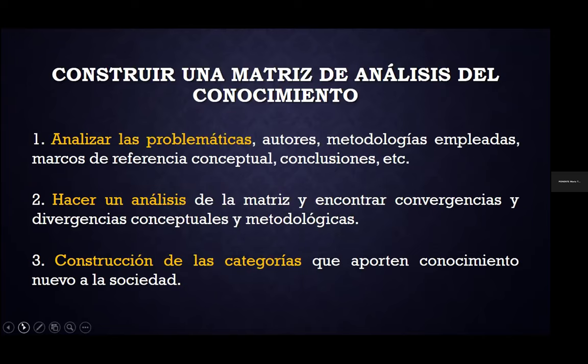¿Qué puede hacer el sujeto investigador con este rastreo de información? Construir una matriz de análisis del conocimiento para analizar las problemáticas: qué han dicho los autores en torno al problema, qué metodología emplearon, qué marcos de referencia conceptual utilizaron y a qué conclusiones llegaron. También hacer un análisis de la matriz para encontrar convergencias y divergencias conceptuales y metodológicas. Es aquí donde entra la parte creativa del investigador: en las divergencias, en qué es lo nuevo, qué falta, qué no está indagado, qué falta por investigar; ahí es donde entra la construcción de nuevas categorías del conocimiento.